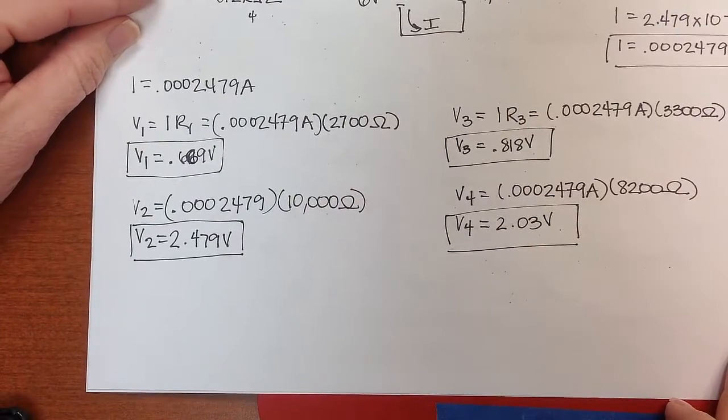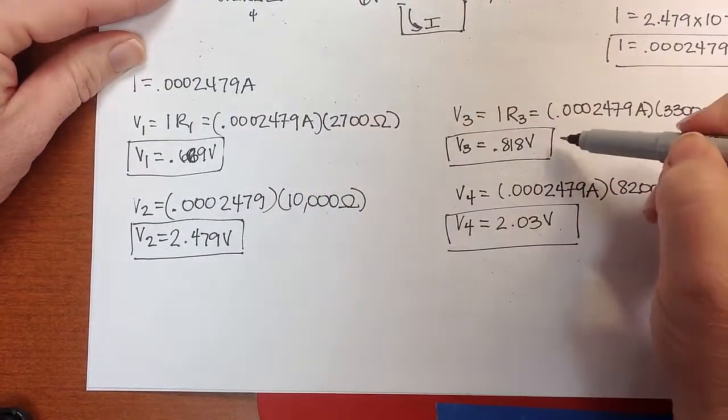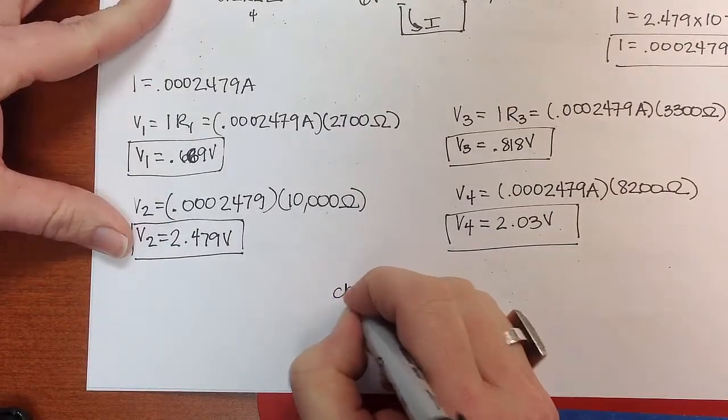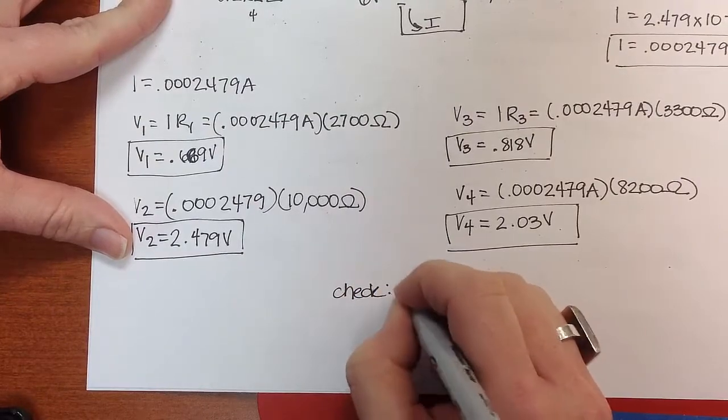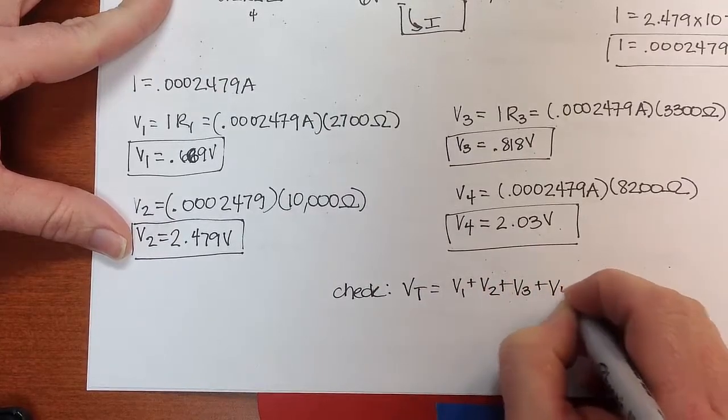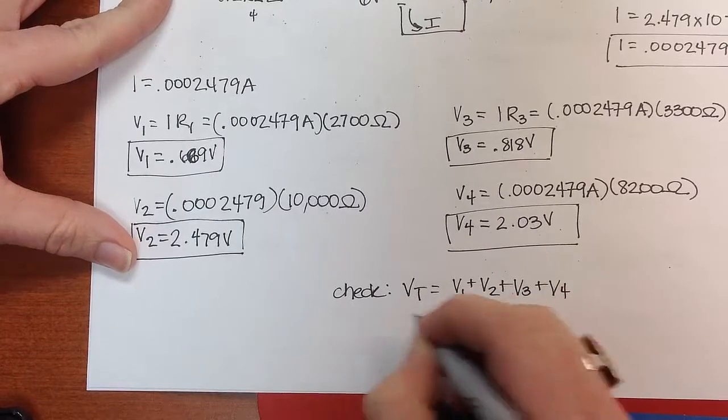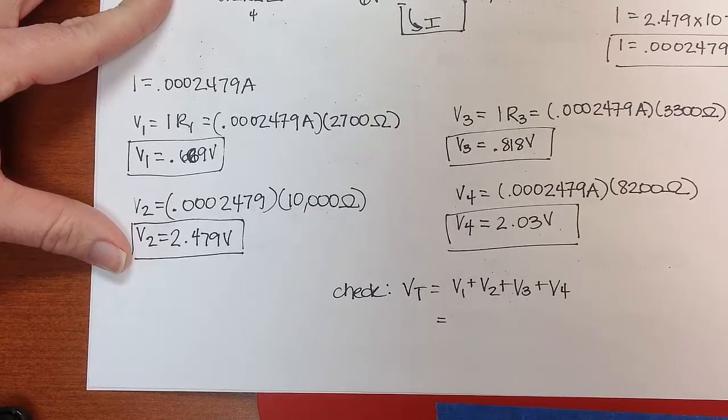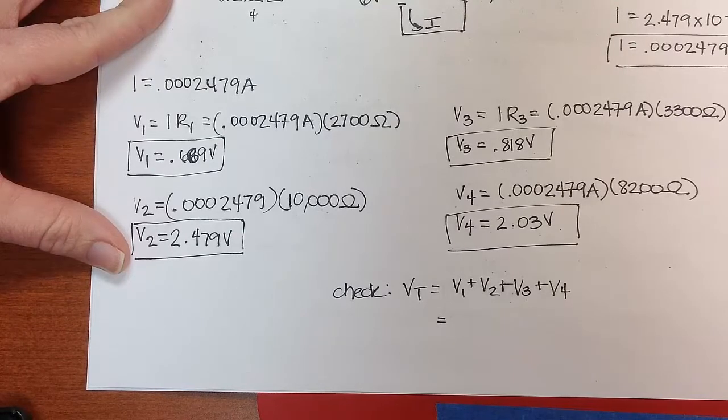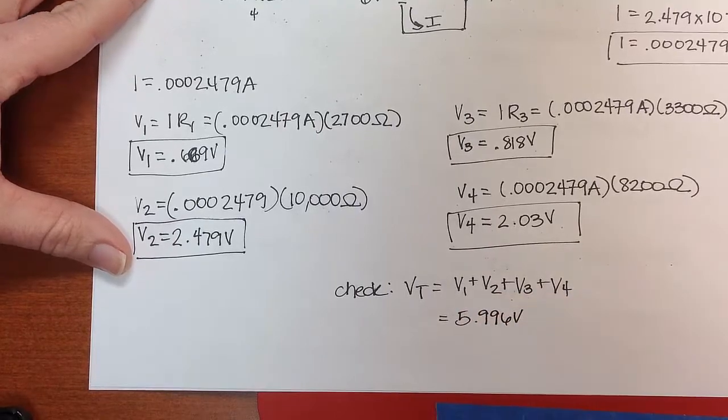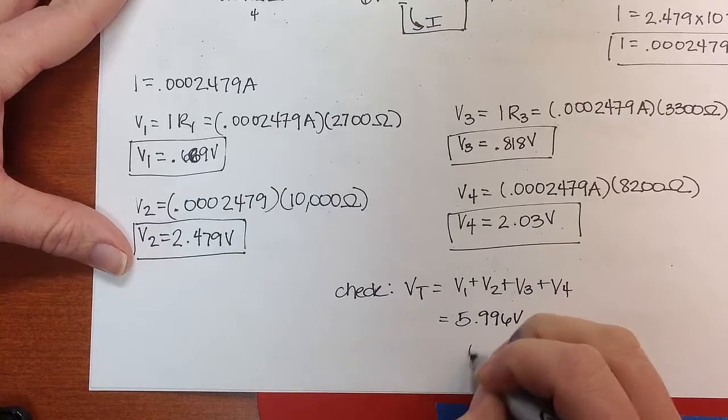I'm going to kind of slide that where you can see all of them. If I add up V1 plus V2 plus V3 plus V4, I hope that I'm going to get 6 volts more or less. I add those up: 0.669 plus 2.479 plus 0.818 plus 2.03. I get 5.996 volts. That's awfully close to the 6 volts I started with.